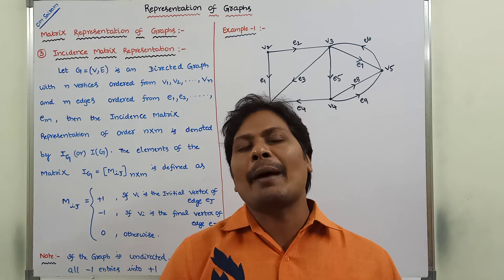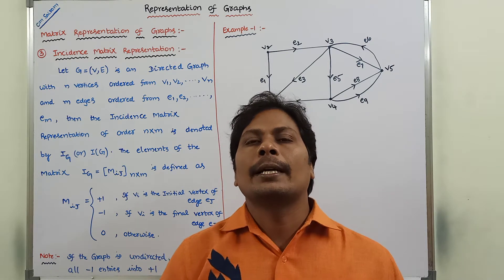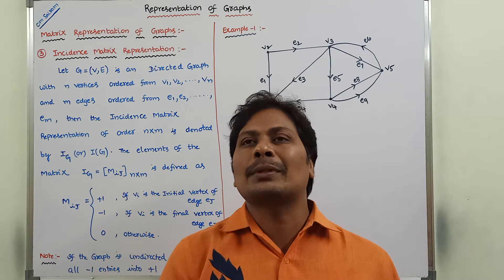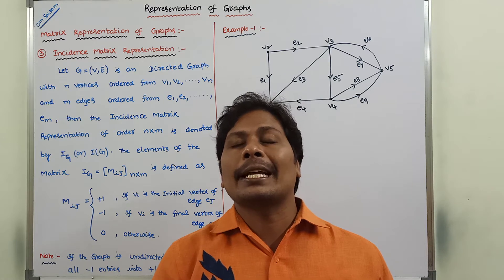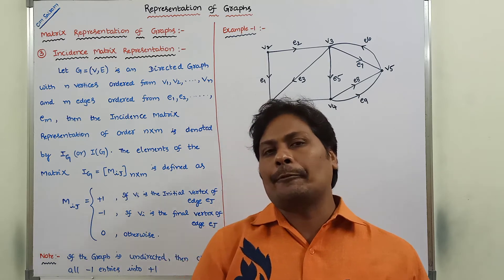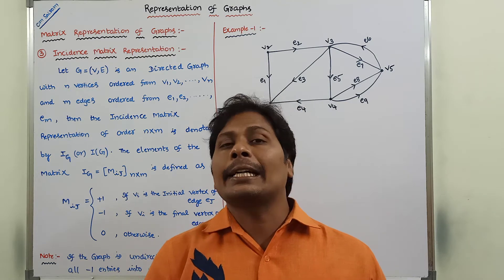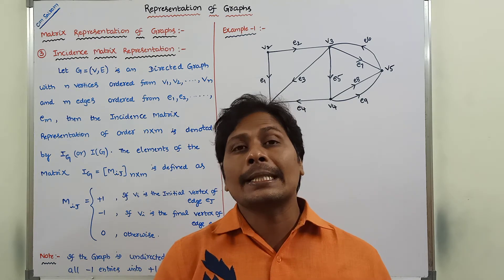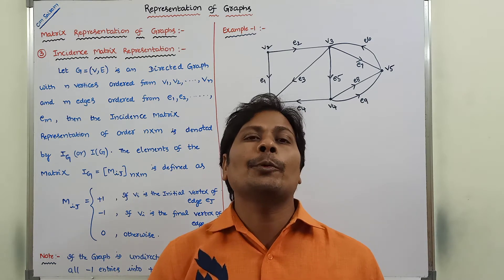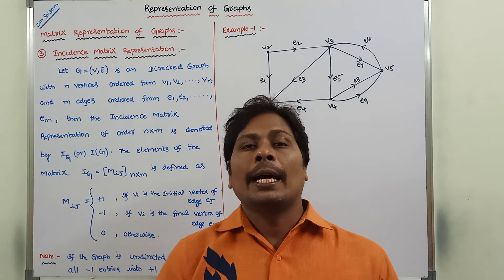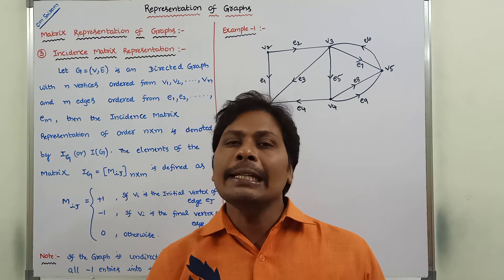The second one is incidence matrix representation. Again, it is two types: incidence matrix representation for undirected graph and incidence matrix representation for directed graph. Incidence matrix representation for undirected graph we have discussed in the previous video. Now, in this video, we have to discuss about the incidence matrix representation for directed graph.